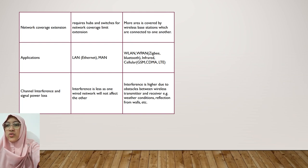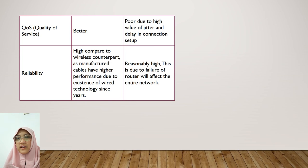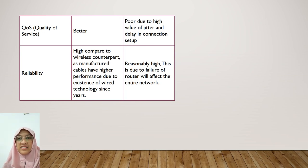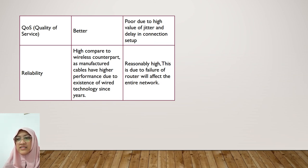For example, weather conditions, reflection from walls, etc. For quality of service or QoS, the wired network is better than the wireless network. The wireless network has poor QoS due to high values of jitter and delay in connection setup. For reliability, the wired network is high compared to wireless counterparts, as manufactured cables have higher performance due to the existence of wired technology over many years. The wireless network is reasonably high, though failure of a router will affect the entire network.